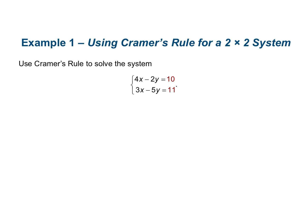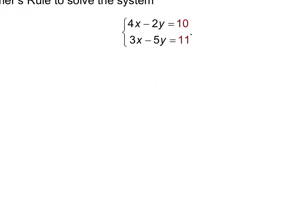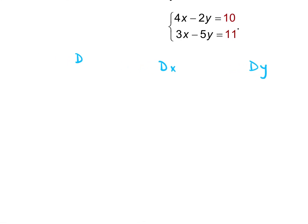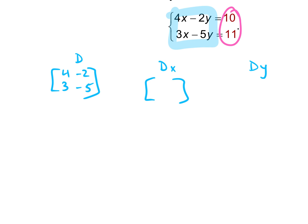Let's do example one. We want to find three matrices: the determinant of our coefficient matrix, D sub X, and D sub Y. Our coefficient matrix — just taking the coefficients — is 4, negative 2, 3, negative 5. In D sub X, we're replacing the X column with the answers: 10 and 11. The Y column stays the same as the original coefficient matrix: negative 2, negative 5.